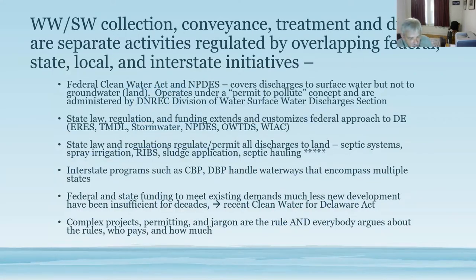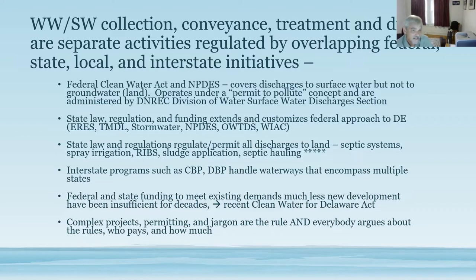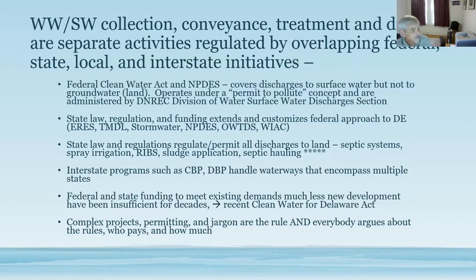How does Delaware deal with wastewater and stormwater? You have to collect it, convey it, treat it or not, and then dispose of it. They're all separate activities regulated by overlapping federal, state, local, and interstate initiatives, making for a very complicated system. At the federal level, we have the federal Clean Water Act, which has been around since 1972 — released on Earth Day. Underneath it is the National Pollutant Discharge Elimination System, or NPDES, which covers discharges to surface water but not to groundwater. This operates as a permit-to-pollute concept, administered within DNREC through the Division of Water.